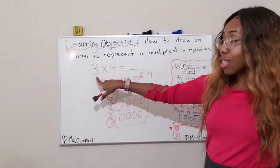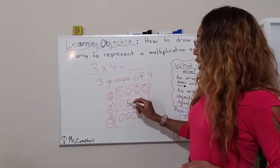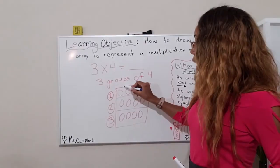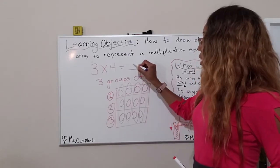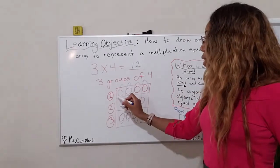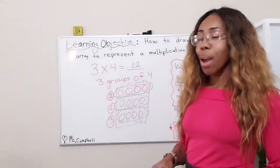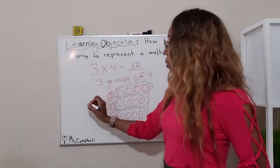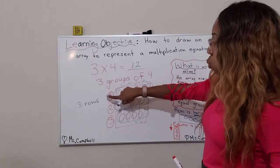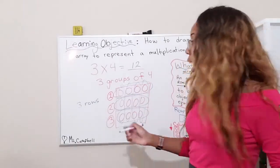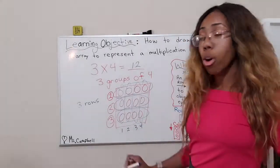This represents three times four equals — what do you think? If we count by threes: three, six, nine, twelve. Or count by fours: four, eight, twelve. So three groups of four equals twelve. How many rows are there? Rows go horizontal, going across: one, two, three rows. How many columns? One, two, three, four columns.